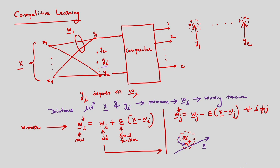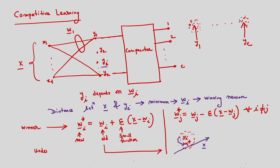This process is very similar to k-means clustering, where we also find the minimum distance between the input vector and the centroids. Here I find the distance between input vector x and centroids y1, y2, ..., yc (c clusters). We find the minimum distance and update the weights accordingly, giving more importance to winning neurons. This is called the underutilization problem because we always update only the winning neurons. There is another variation called frequency sensitive competitive learning.